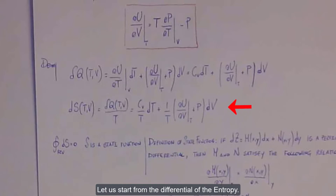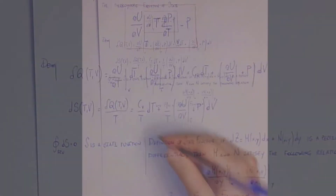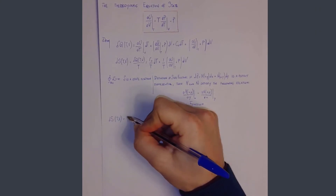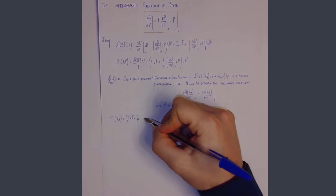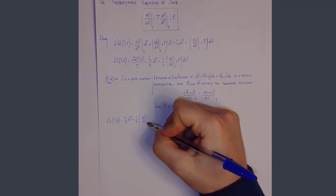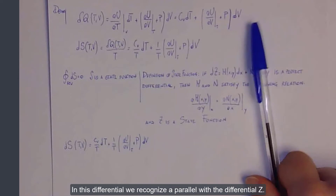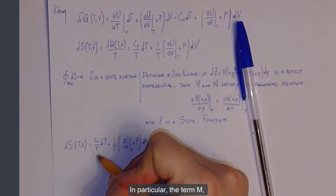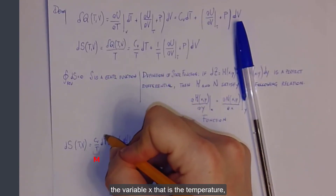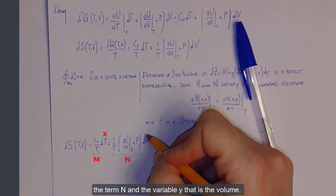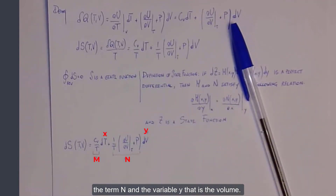Let us start from the differential of entropy. In this differential, we recognize a parallel with the differential dZ. In particular, the term M, the variable X — that is the temperature — the term N, and the variable Y — that is the volume.